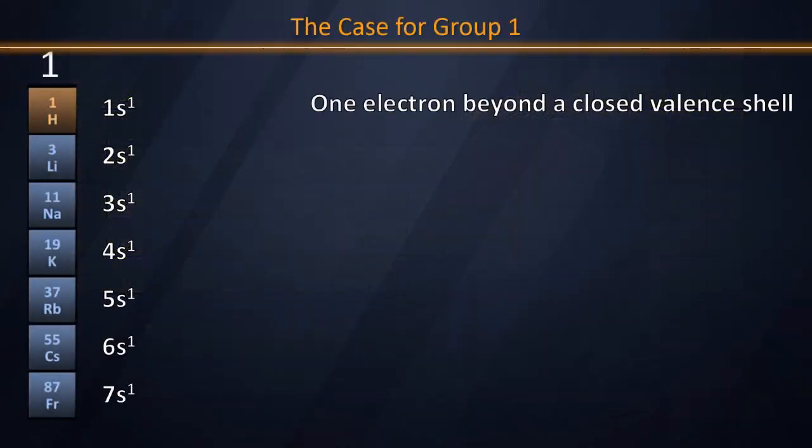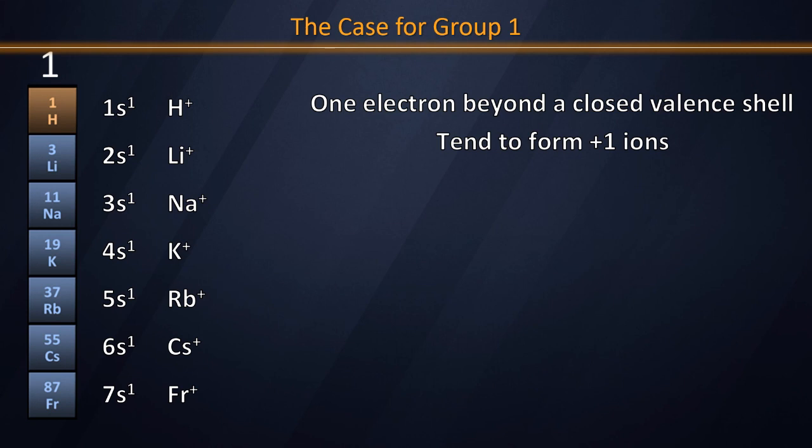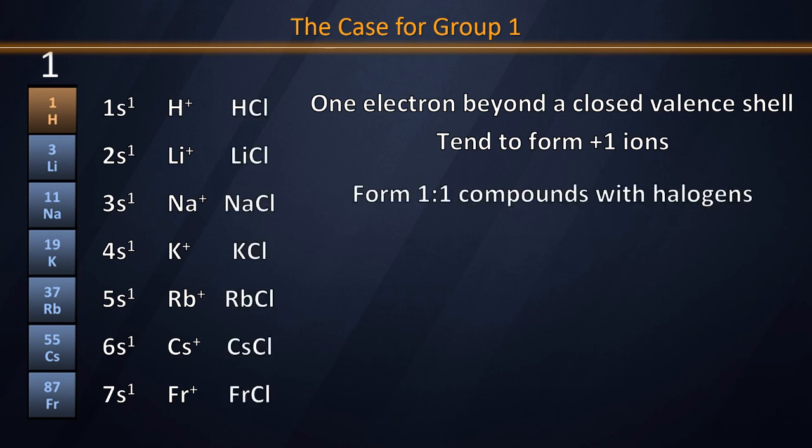Because of that, hydrogen tends to form plus one ions, as do the alkali metals, and therefore it tends to form compounds with similar elements in similar proportions. That's probably the main reason why we see hydrogen in group one most of the time.